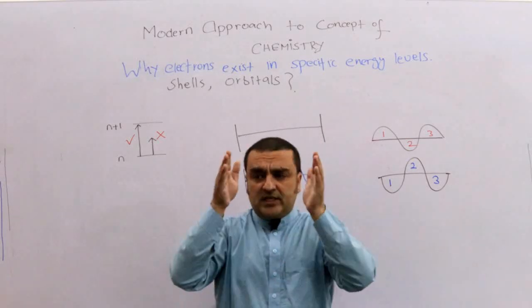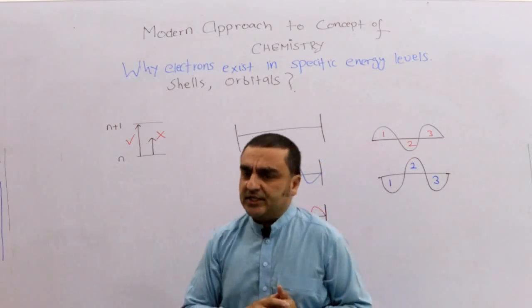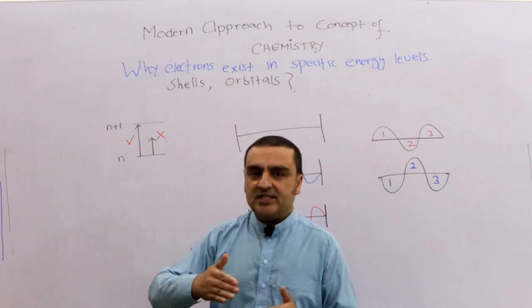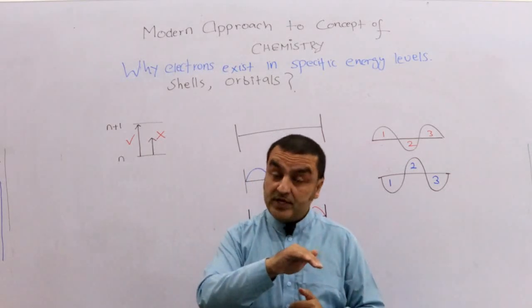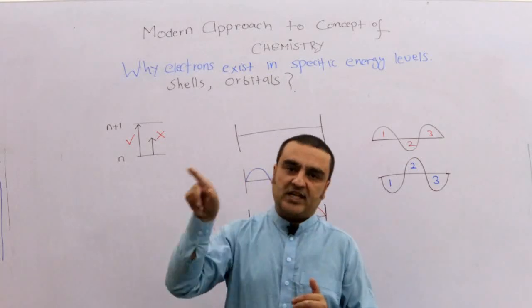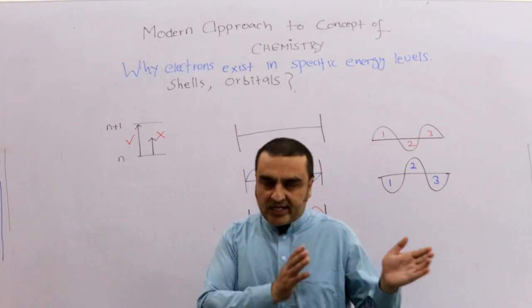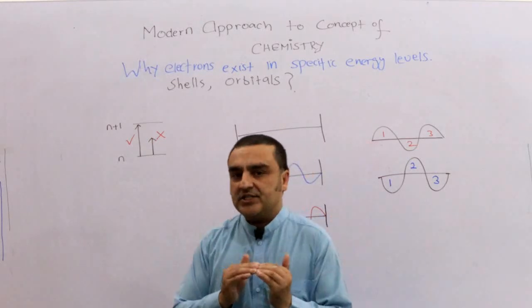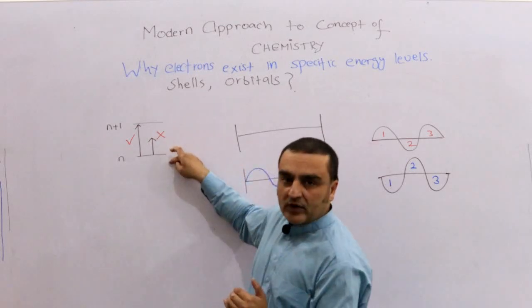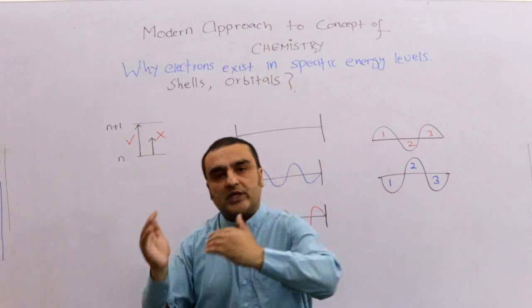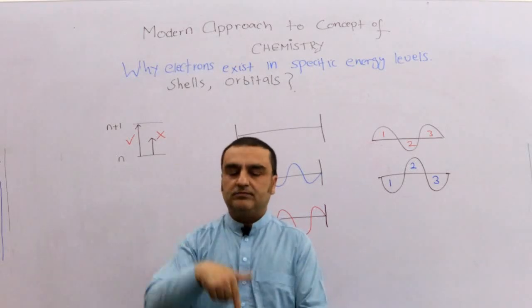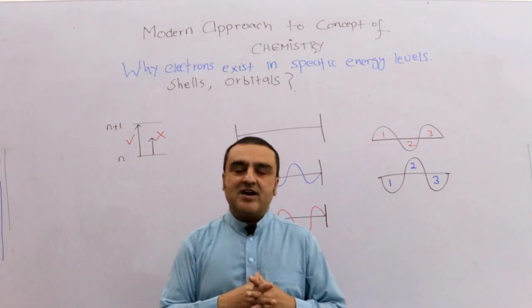The electron lives in that excited state for a very very small fraction of a second and then returns to the stable state — the place where the electron is interfering very positively with itself. So it is the standing wave which keeps the electron at a fixed energy level, and it is the interference which decides where the electron can be excited and what the different energy levels are — first shell, second shell, third shell — all based on constructive interference. Thank you very much.